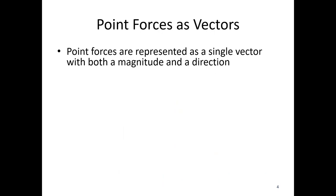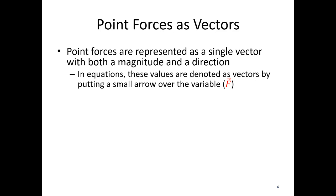Point forces are represented by a single vector with both a magnitude and direction. In equations, these values are denoted as vectors by putting a small arrow over the variable. This F is indicating it is a force vector. If we do just the letter F, that would be the magnitude of the vector. So F without the arrow is just the magnitude, F with the arrow is the entire force vector.